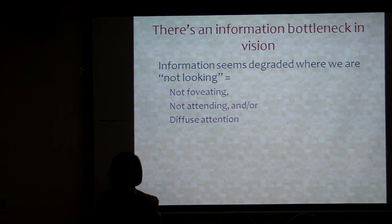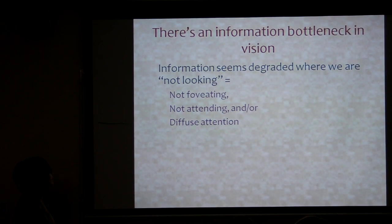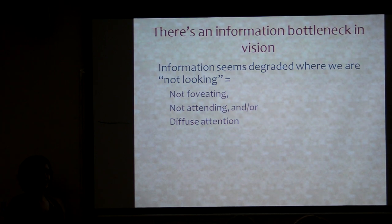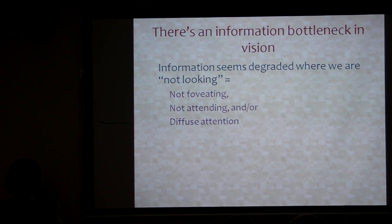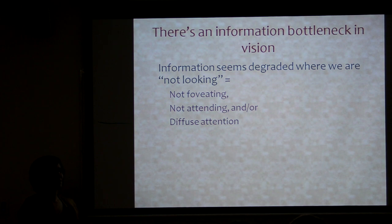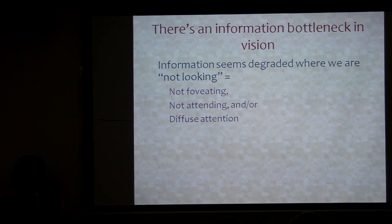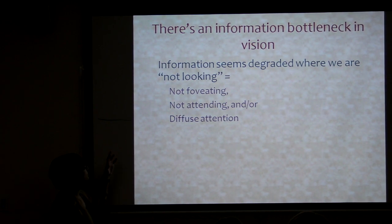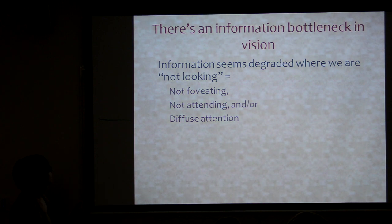Both of these things, as well as some other aspects of vision, have been taken as evidence that there's some kind of information bottleneck in vision. The general idea is that perhaps because there's a limit to what you can shove through the visual system, the strategy it uses is to finely encode stuff where you're attending and where your fovea is, and then more coarsely encode stuff elsewhere. So information is somehow degraded where you're not looking.